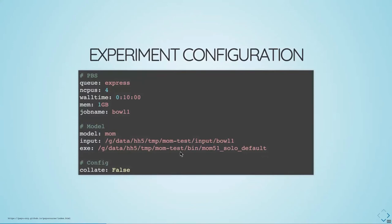This is what the experimental configuration looks like — the config.yaml file. In this case it's nice and simple, with just three different sections. Hash is a comment character. The first section is PBS options: the queue, number of CPUs, wall time, memory, and job name. Job name defaults to the same as your experiment name, so you don't have to specify it, but you could give it a name that means more to you in the queue.